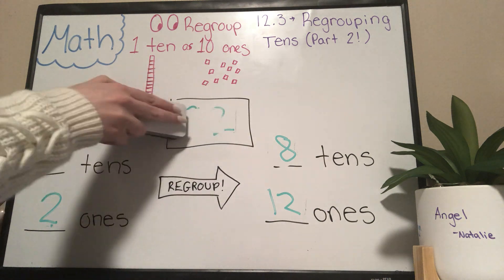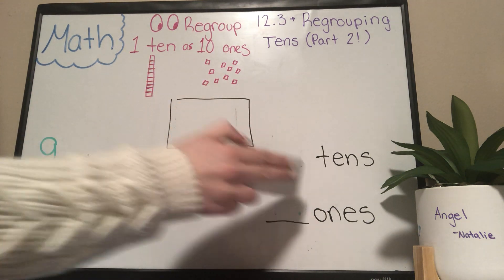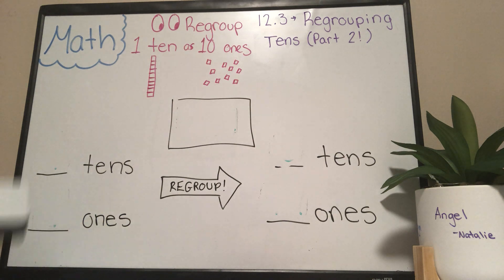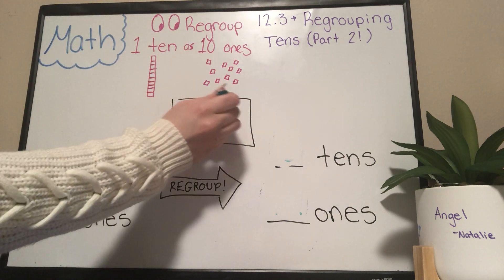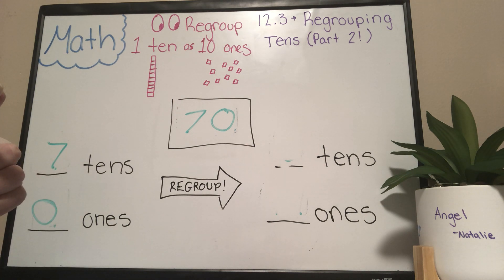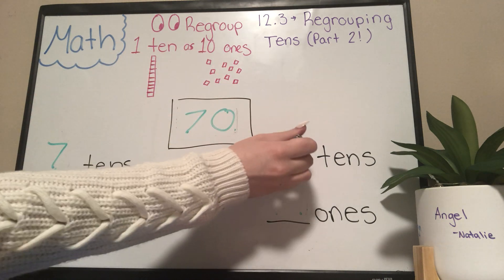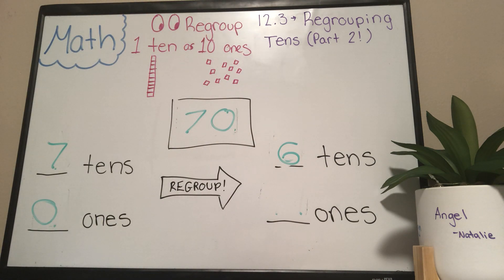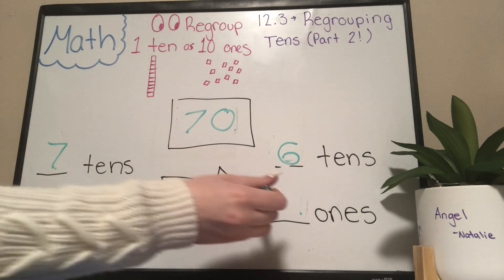We're going on to the next problem, which has the big number seventy. This one's kind of a cool one. How many ones are in seventy? None. So that must mean how many tens? Seven tens. Take away one of these tens — six. And now we have ten ones plus zero ones. Ten ones plus zero ones equals just ten.